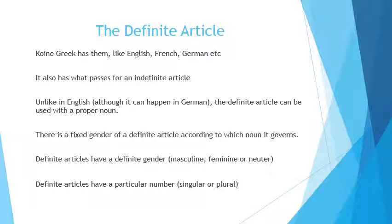Definite articles have a particular number — singular or plural. As we announced with some joy in our last lesson, we don't have to worry about the dual, which only refers to two things. You can go to classical Greek or Sanskrit for your feel of that.